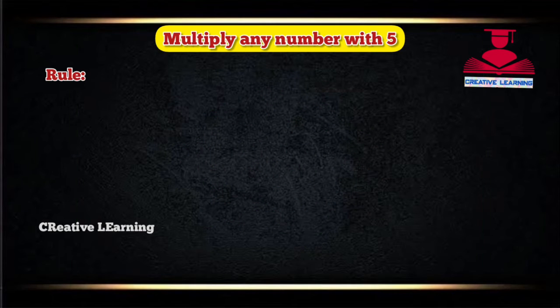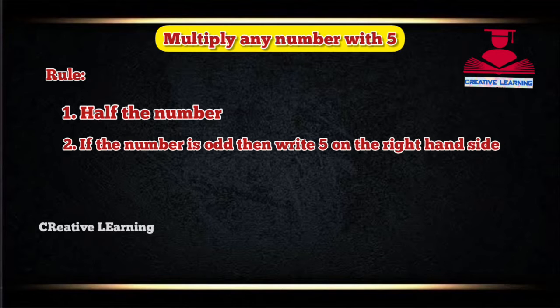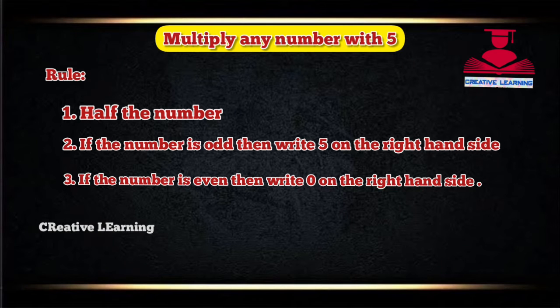There are some rules for this. Rule 1: Half the number. Rule 2: If the number is odd, then write 5 on the right-hand side. Rule 3: If the number is even, then write 0 on the right-hand side.